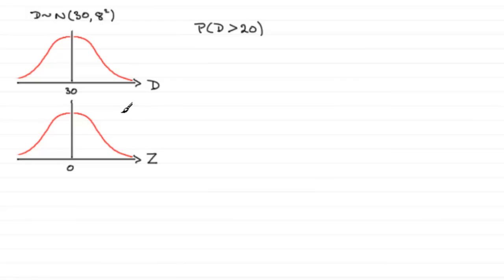So to work out first of all the probability D is greater than 20, let's put 20 somewhere on this distribution. Let's say it's over here. So there's my observed value, which in this case is little d, little d being 20. And we want to work out the probability then of being more than 20, so that's represented by that area to the right of 20.